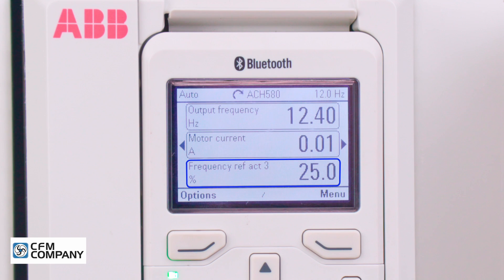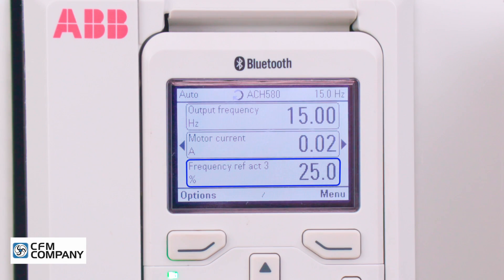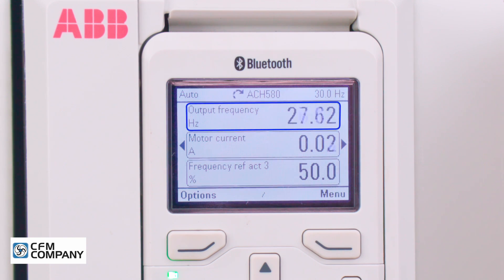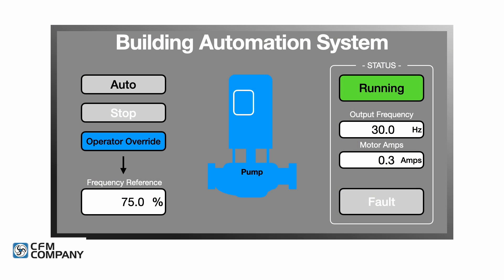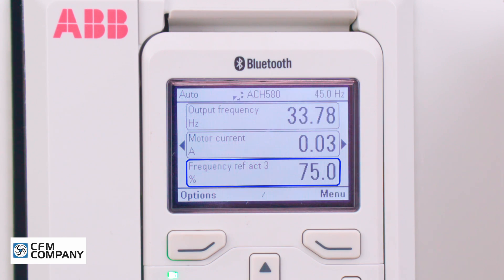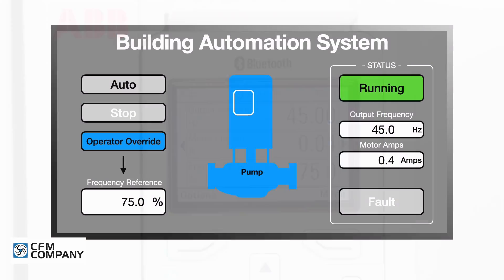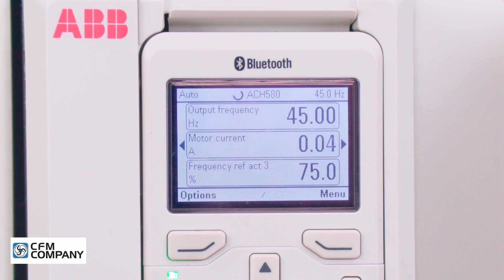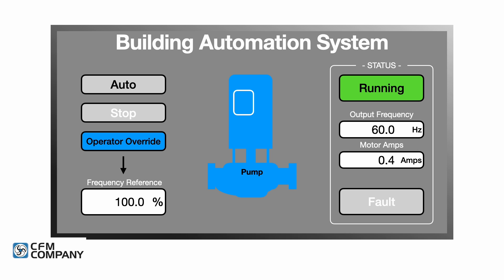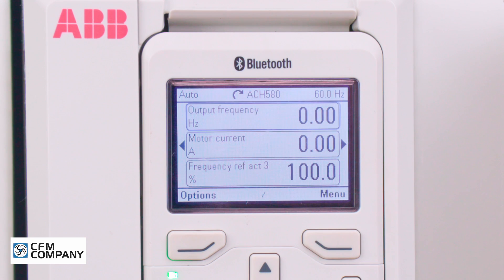The third line of the display should show 25% and the drive output frequency should increase to quarter speed. Send the drive a 50% frequency reference. The third line of the display should show 50% and the drive output frequency should increase to half speed. Send the drive a 75% frequency reference. The third line of the display should show 75% and the drive output frequency should increase to three-quarter speed. Send the drive a 100% frequency reference. The third line of the display should show 100% and the drive output frequency should increase to full speed. Send the drive an output frequency reference of zero. Frequency Ref Act 3 should read 0%. With a successful test of the start-stop and frequency reference, the ACH580 drive is now ready for operation following commands sent over serial communications.